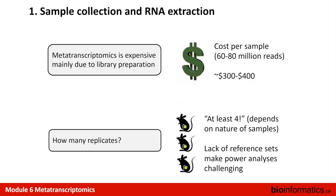Metatranscriptomics isn't as widespread partly because of expense, largely due to library preparation. Illumina's joint kit does the library preparation for about $250 per sample, plus sequencing costs works out to about $300-400 per sample. If we can develop homebrew solutions that don't rely on these expensive kits, that could really drop the price down.